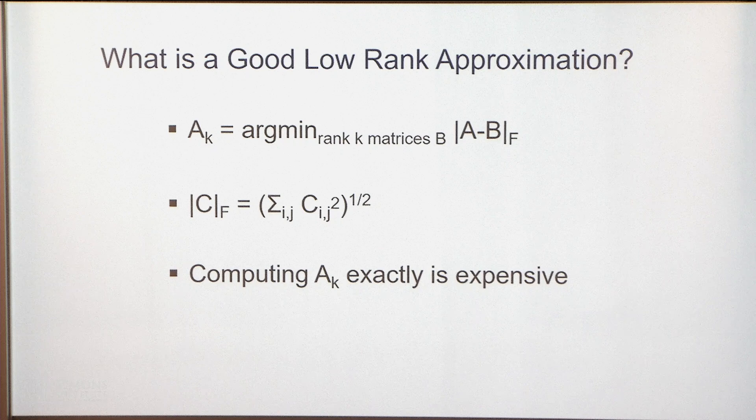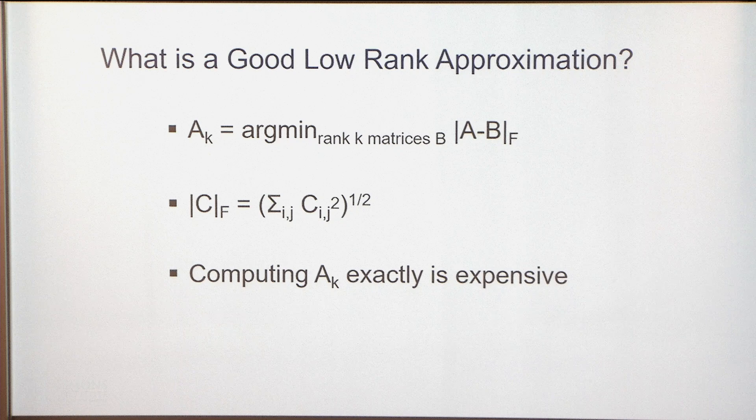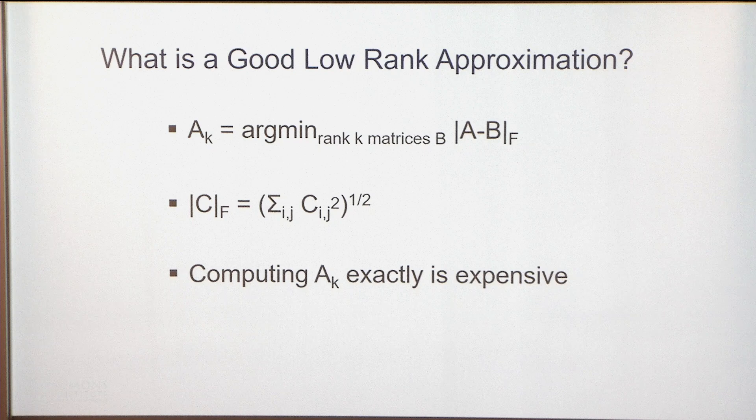Why do people use the truncated SVD? A_K is the best rank-K approximation for A under various norms — in particular, it's the argmin over rank-K matrices B of the Frobenius norm of A minus B, where the Frobenius norm is the sum of squares of entries to the one-half. The issue is that computing A_K exactly using the SVD can take N·D² time, and we want much faster algorithms.